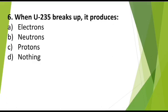MCQ number 6: When U-235 breaks up, it produces Option A: Electrons, Option B: Neutrons, Option C: Protons, Option D: Nothing. Correct answer is neutrons.